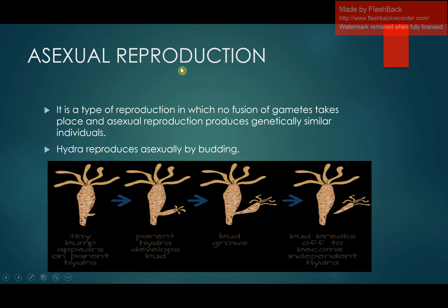Mitosis is also the basis of asexual reproduction. Asexual reproduction is a type of reproduction in which no fusion of gametes or germ cells takes place, and it produces genetically similar individuals — identical to their parents. For example, if you cut a cutting from a rose plant that produces red roses and grow it in the soil, it develops and produces the same flowers as the parent plant. This is because of asexual reproduction and Mitosis.